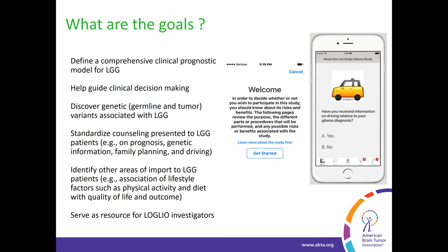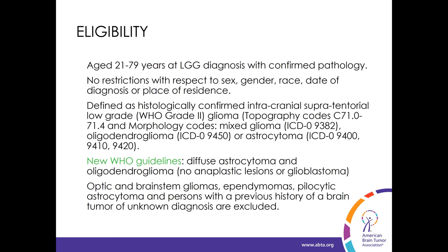So why are we doing this? First, we want to better define what we should be doing clinically for low-grade glioma patients — whether to do a biopsy only or larger surgery, whether to move to chemotherapy or wait until recurrence, whether to do radiation therapy. We want to look for genes both in the germline and the tumor associated with risk and response to treatment. We also want to provide better information to patients about everyday quality of life and living, including risk to family members, family planning, and driving rules that vary state by state.